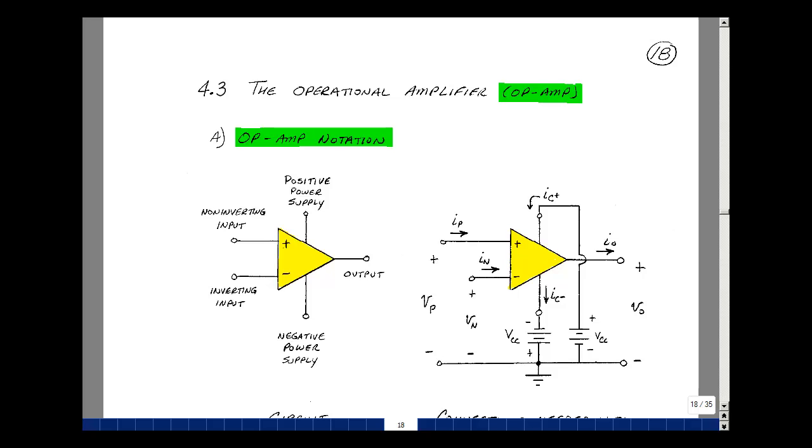You can buy an integrated circuit at most electronic parts stores called an op-amp. It typically has five terminals: a positive input, a negative input, an output, a positive power supply, and a negative power supply.